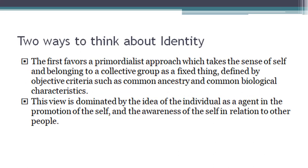Do tariqe hain. Sab se pahli jo approach hai, hum usko kehte hain primordialism. Primordialist ek aisa idea hai jis mein hum kehte hain ke jo bhi nations hain, jo bhi identities hain hamare — yani ke ethnic identities — jaisa ke agar mera pichla culture Greek culture hai, ya Chinese culture hai, ya Roman culture hai, to woh meri ethnicity hai jo ke fixed hai. Primordialism ek aisi theory hai jo kehti hai ke humari identities fixed hain, ye change nahi hoti. Ye natural hai, ye ancient hai. Ethnicity aisi chiz nahi hai ke agar hum kisi society mein jayen to woh change ho jaye. Identity is something that is stable and fixed.